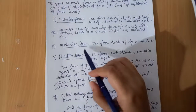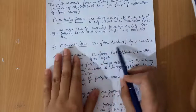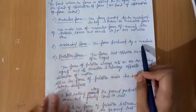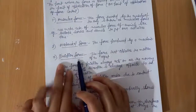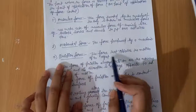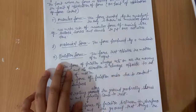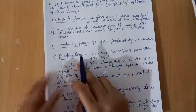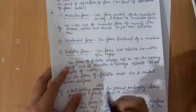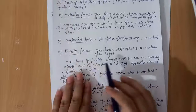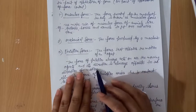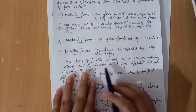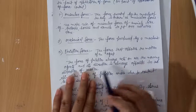The next type of contact force is mechanical force. The force produced by a machine is called mechanical force. Friction force is the force that opposes the motion of an object. The force of friction always acts on all moving objects and its direction is always opposite to the direction of motion.